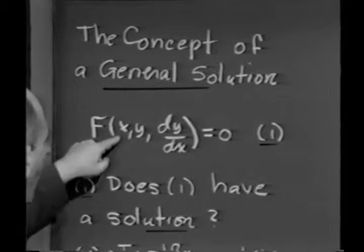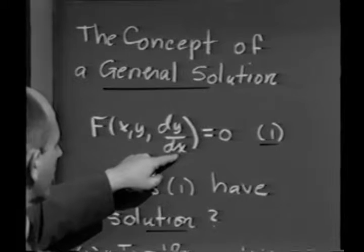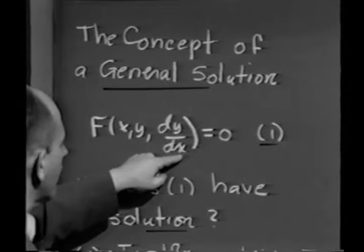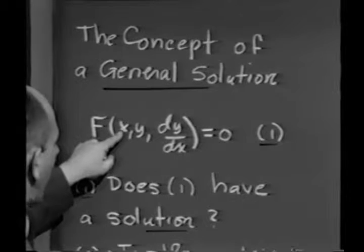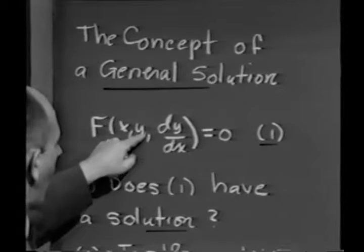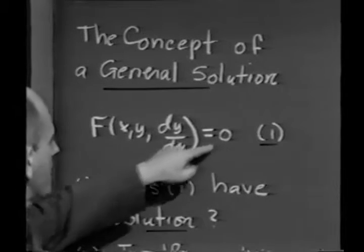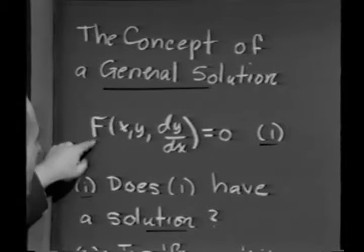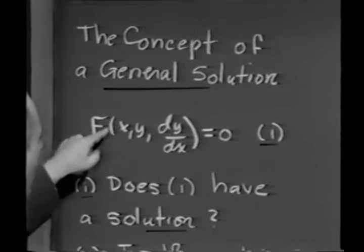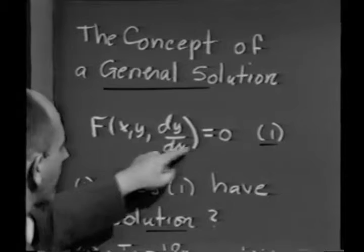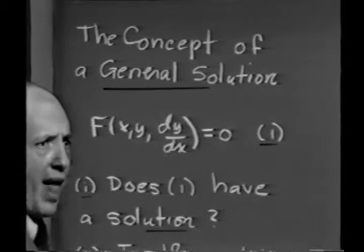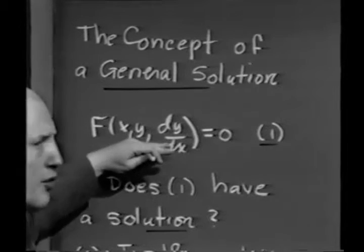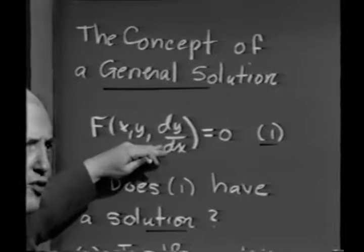Now, in general, what we're saying is all we know about a first order differential equation is that there is some relationship between the independent variable x, the dependent variable y, and dy/dx. And the symbolic way of writing that is to say that some function, say capital F, of x, y, and dy/dx is 0. That's just a mathematical symbolism for writing down the most general first order differential equation.